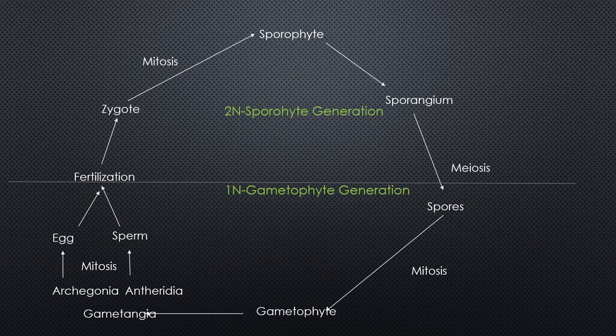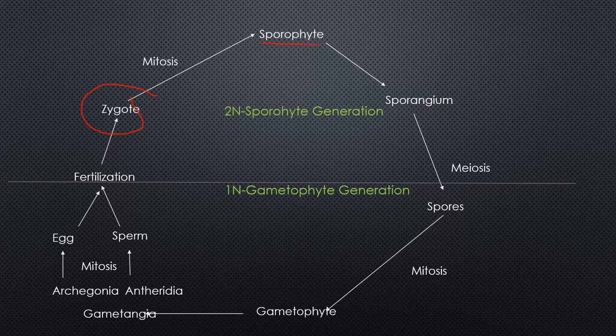First, I want to review the alternation of generations lifecycle, as it's really important that you understand this — and yes, you will see this again. Starting with our baby plant: once the seed starts germinating, within our seed we had a zygote, and it is a diploid multicellular sporophyte generation. That embryo undergoes mitosis and maturation until you have a full-grown sporophyte. All the plants you're used to seeing — your oak trees, your ferns — that is the sporophyte generation.